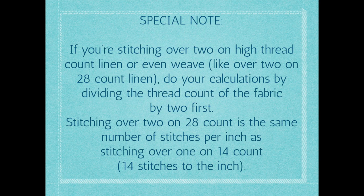Because stitching over 2 on 28-count is exactly the same number of stitches as stitching over 1 on 14-count. Just remember: if you're going to be stitching over 2, whatever your thread count is — whether it's 28, 32, 36, whatever — before you start doing all of these calculations, divide that fabric thread count in half. That's the number you're going to be using for all of your calculations.